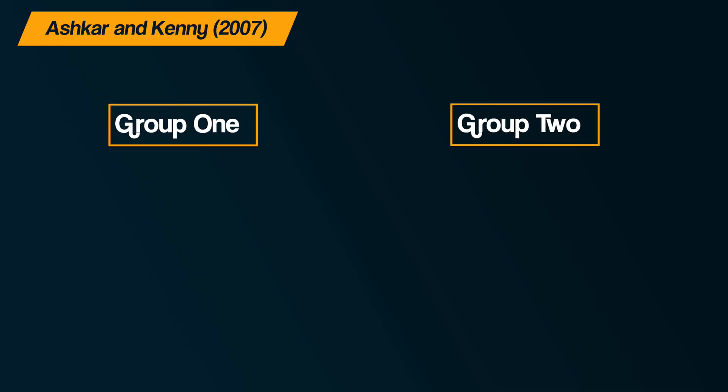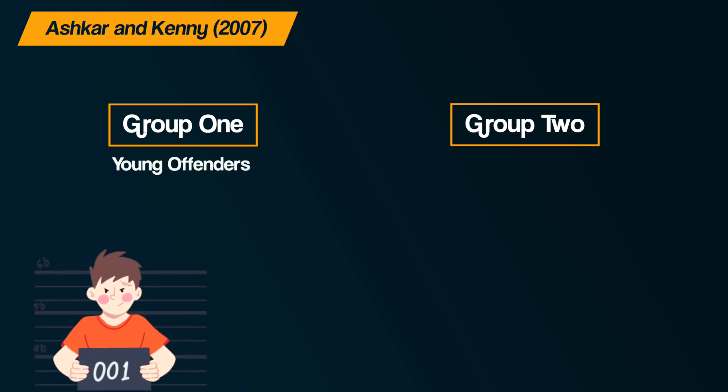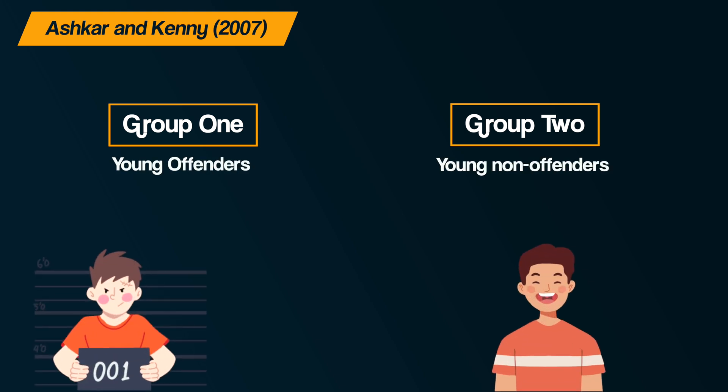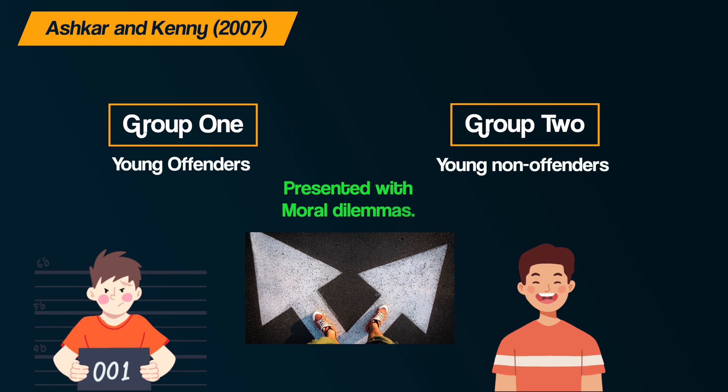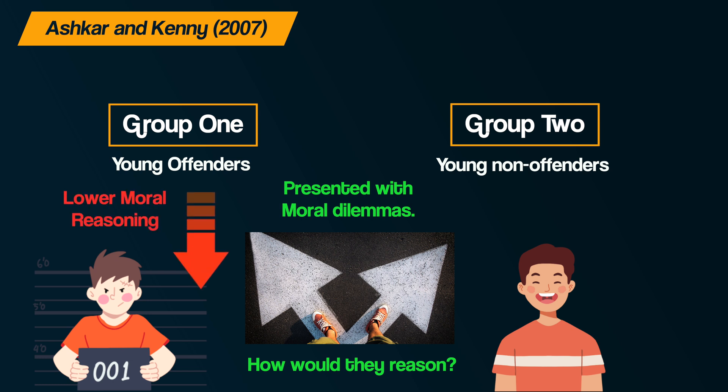Supporting evidence for the role of moral reasoning in crime comes from Ashkar and Kenny in 2007. The study focused on two groups of adolescents — young offenders and non-offenders — presenting them with moral dilemmas similar to those used by Kohlberg. They found that young offenders reasoned at lower levels of moral development compared to non-offenders, particularly those who committed violent crimes, reasoning in terms of self-interest rather than concern for social rules or the rights of others.